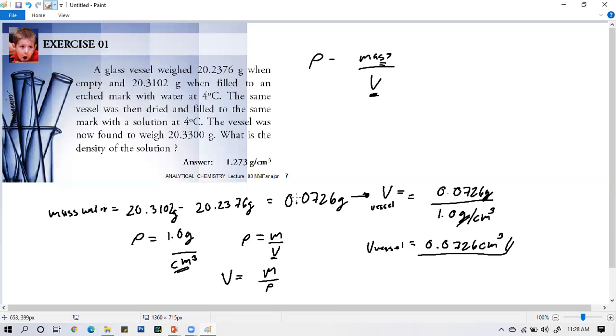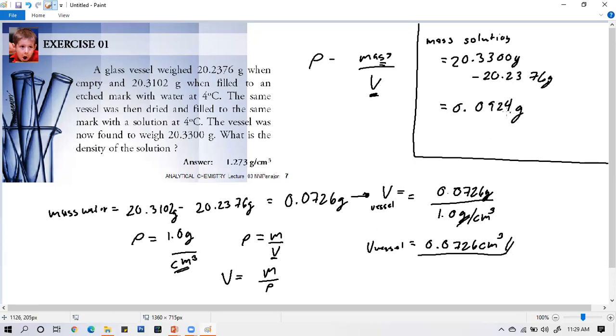What about the mass? What mass are we looking for? We're looking for the mass of the solution, because we're finding the density of the solution. In the problem, when filled with solution, it weighed 20.3300 grams. So 20.3300 grams minus the empty vessel, 20.2376 grams, gives us 0.0924 grams. That's the mass of our solution.